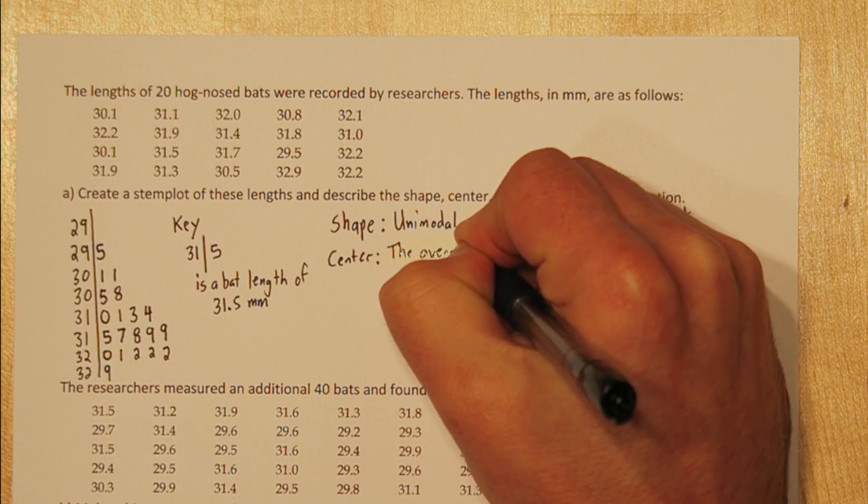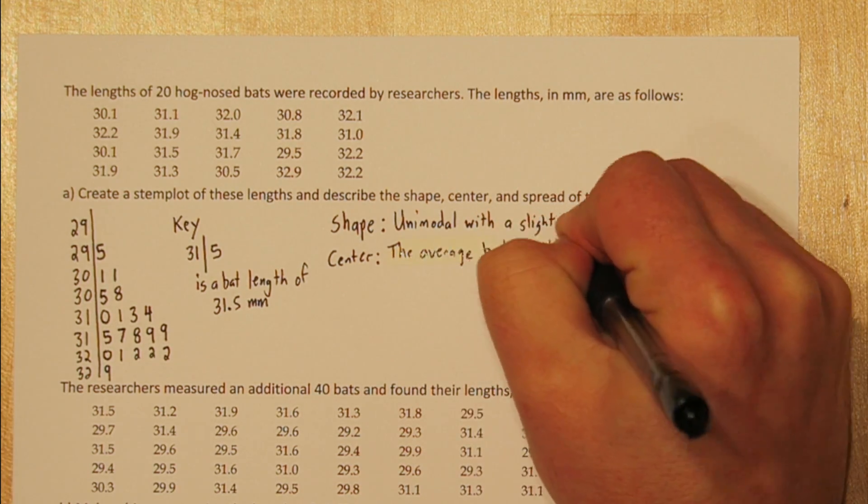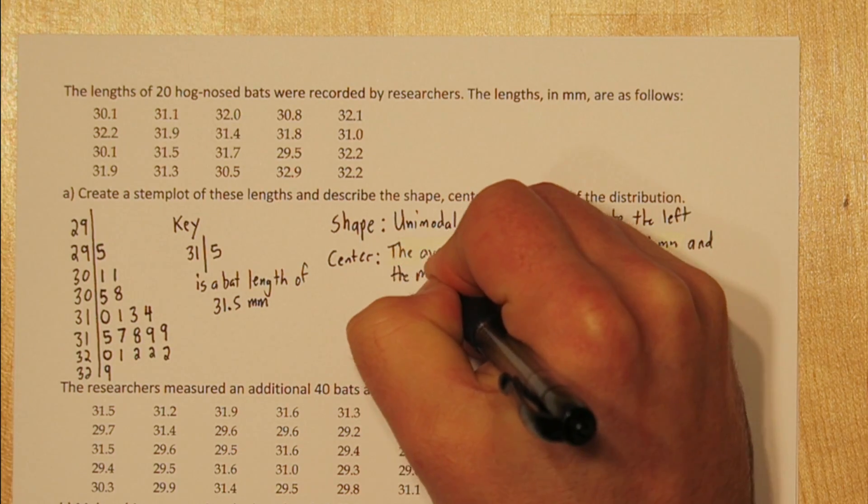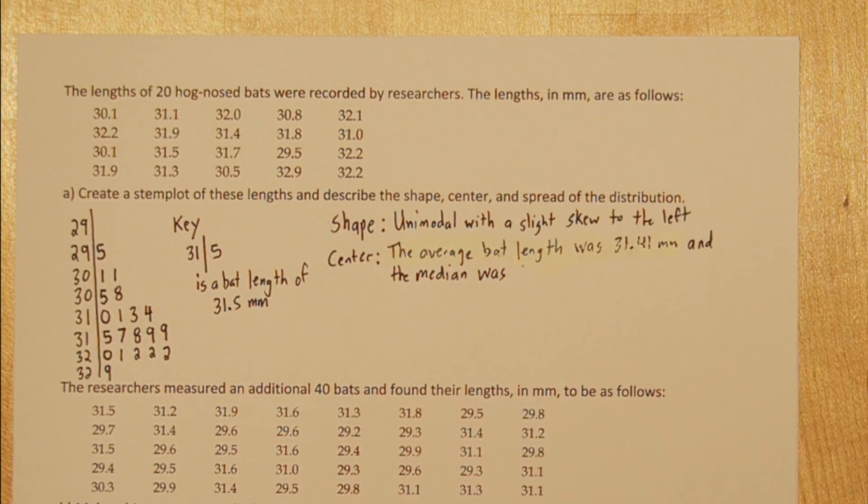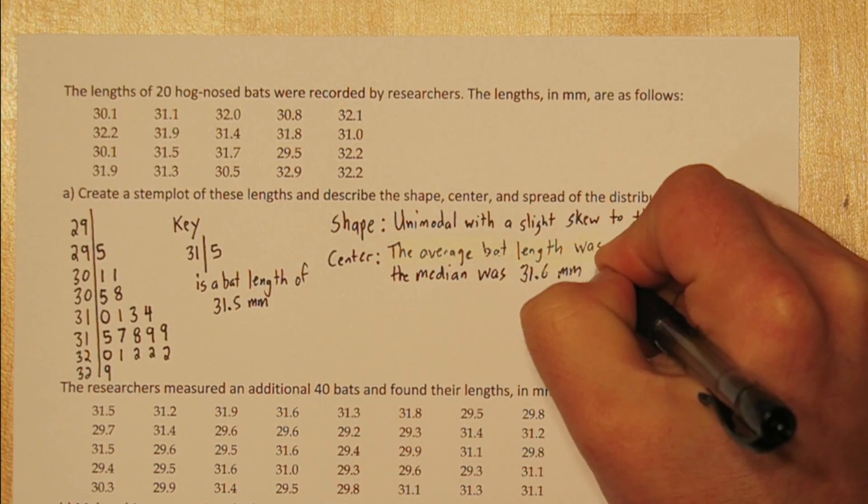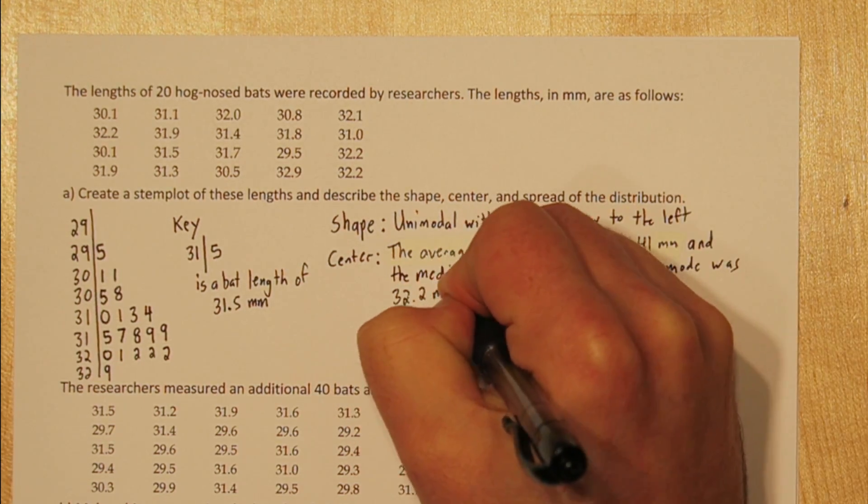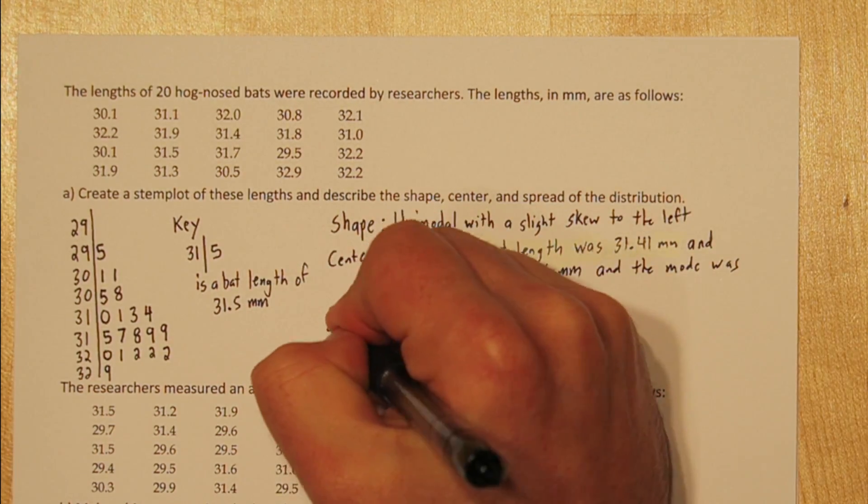So for center, we said that average bat length was 31.41 millimeters, and the median was 31.6 millimeters, and the mode was 32.2 millimeters. It's always good to add context whenever you can. So instead of just reporting these numbers, we actually reported them as bat lengths.